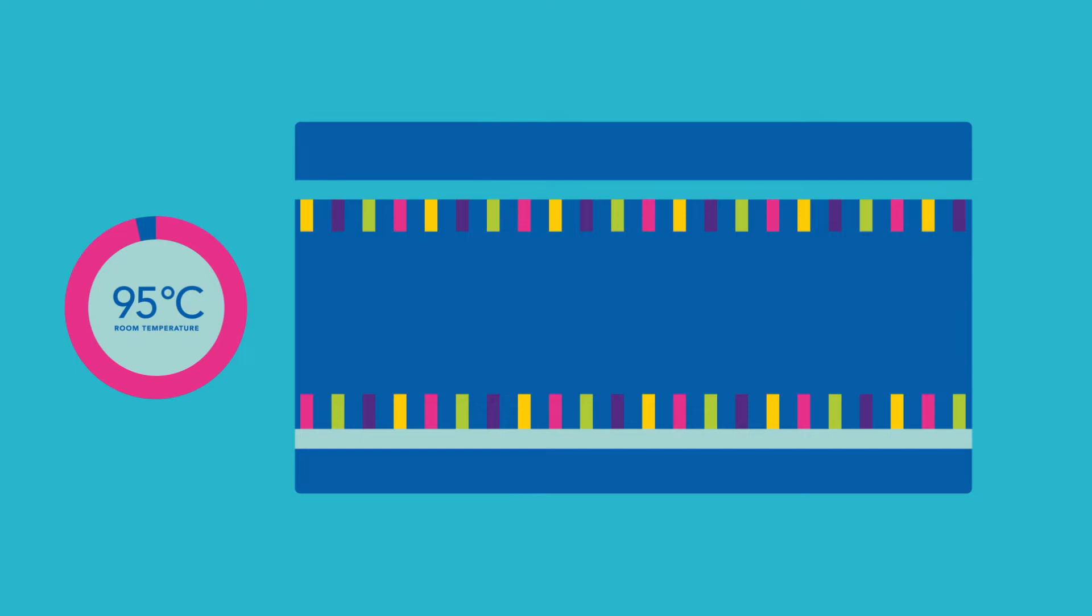During the annealing step, the temperature cools between 45 to 65 degrees Celsius, and the single-stranded primers attach to the appropriate ends of the target sequence. During the cycle, DNA polymerase attaches to the primer template and begins to incorporate complementary nucleotides.